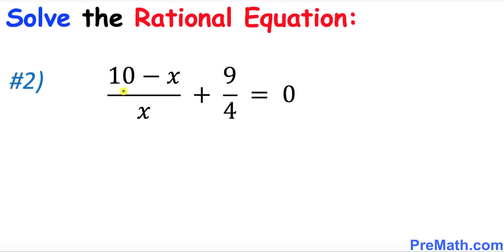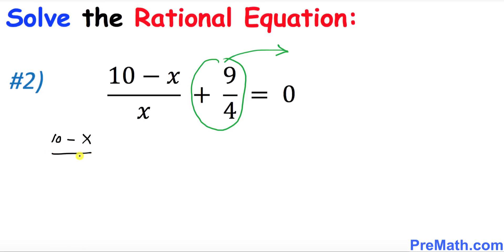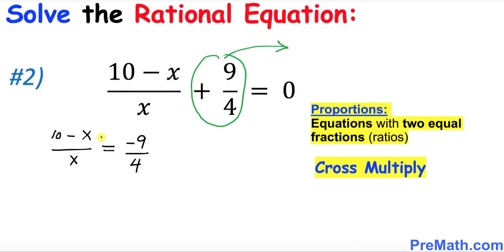Now we are going to solve this other rational equation. The first step is to rearrange — I want you to look at this fraction positive 9 over 4 and move it to the right hand side. So this becomes x times 10 minus x, divided by x, equals negative 9 over 4. Once again this equation is simply a proportion, since we have two fractions with an equal sign in between.